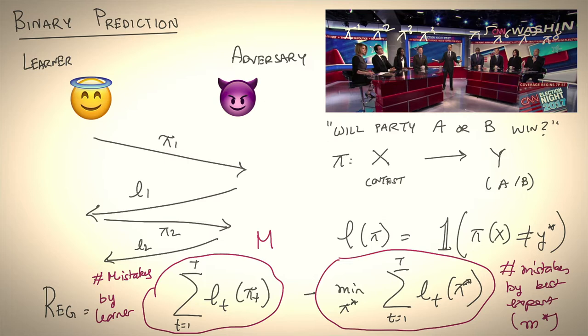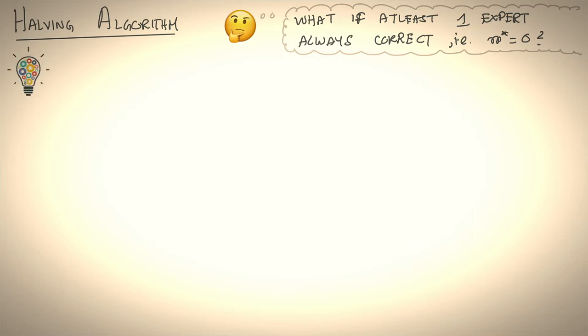And we would like m and m star to be as close together as possible. Now, if you knew which expert was good up front, your regret would be zero. But the challenge is you don't know, and you'll have to kind of find out on the fly. So now we're going to talk about a really intuitive algorithm called halving that will give us a pretty easy solution under the following assumption. What if at least one expert is always correct? That is, one expert gets all the contests right, and hence m star is equal to zero.